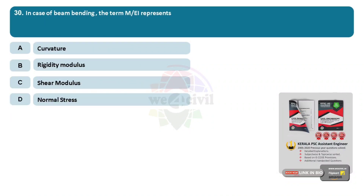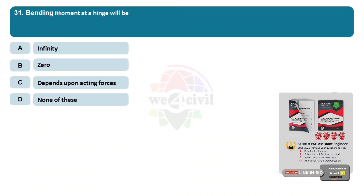Question 30: In case of beam bending, the term M/EI represents? Options: A, curvature. B, rigidity modulus. C, shear modulus. D, normal stress. Answer: Option A, curvature. Question 31: Bending moment at a hinge will be? Options: A, infinity. B, zero. C, depends upon acting forces. D, none of these. Answer: Option B, zero.